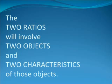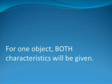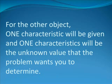The two ratios will involve two objects and two characteristics of those objects. For one object, both characteristics will be given. For the other object, one characteristic will be given and one will need to be found.